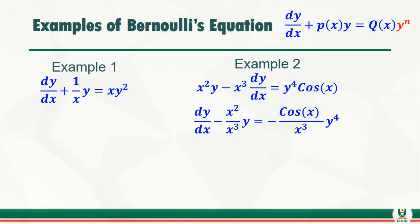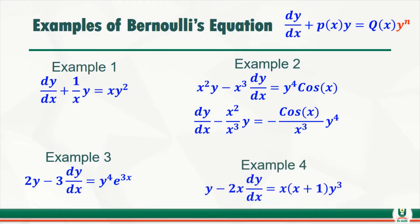In example three, n is also 4 because we clearly have y raised to power 4 multiplied by e to the 3x. So y raised to power 4 will be the first thing we need to address. In example four, Q(x) has a multiplier of y raised to power 3, which means y cubed is the first thing we need to address in order to solve the problem.